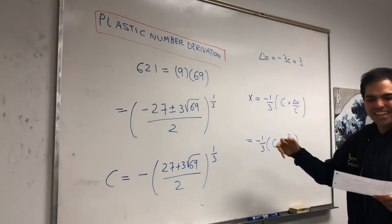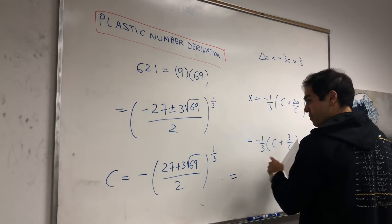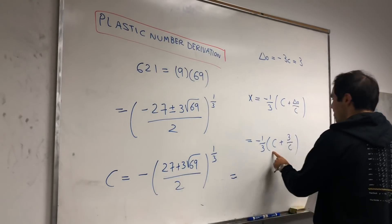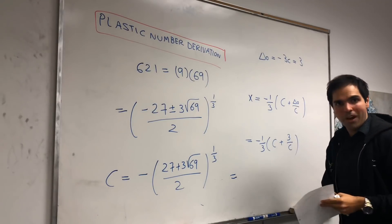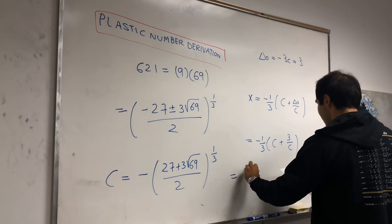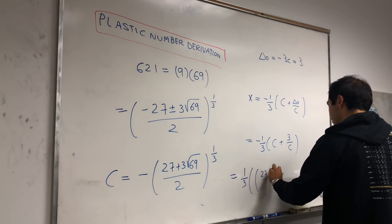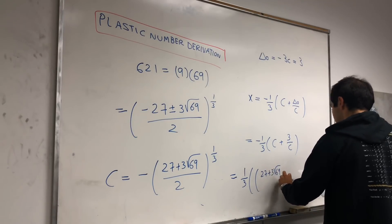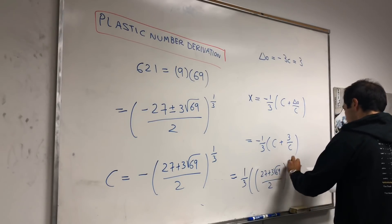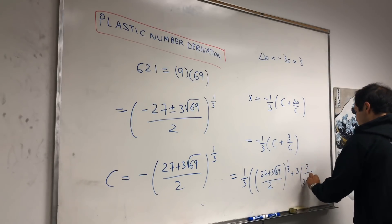And here comes the fun part. Let's take C here and plug that in. So, this becomes, let me see what happened to... Oh, yeah, because this is negative, the C is negative, everything becomes positive. That's why we had to make sure to take the negative one. Okay. And so, it becomes 1 third, 27 plus 3 square root of 69 over 2, to the 1 third, plus 3 times 2 over 27, plus 3 square root of 69 to the 1 third.